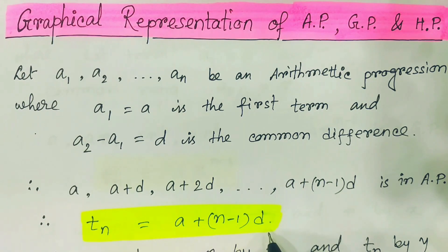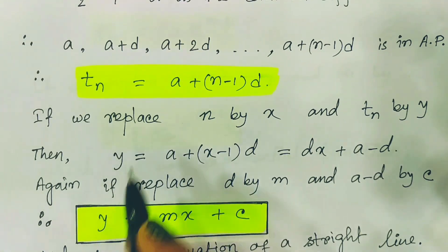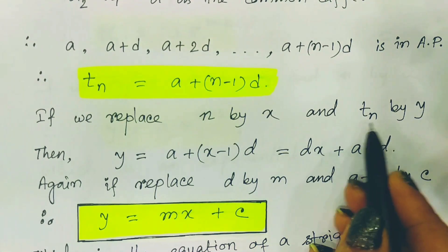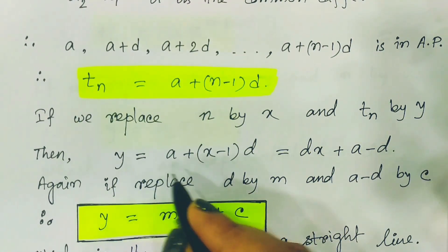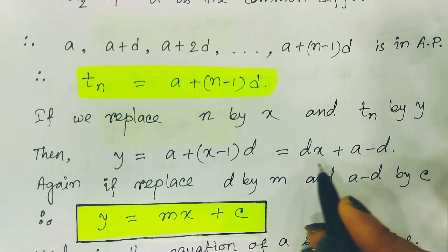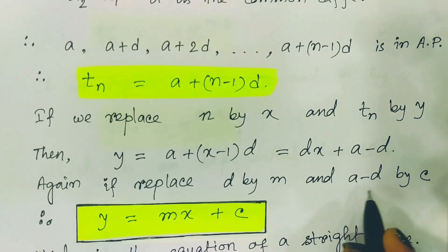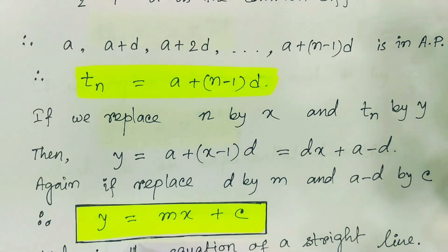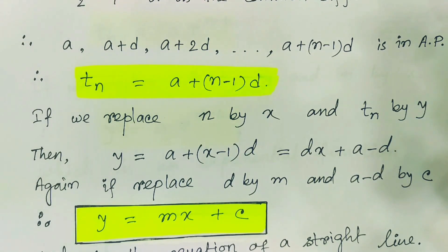Now if we replace n by x and tn by y, then the nth term expression can be written as y equals a plus (x minus 1) into d. Simplifying, this becomes y equals dx plus (a minus d). If we replace d by m and (a minus d) by c, then we get y equals mx plus c. This is a very well-known equation.